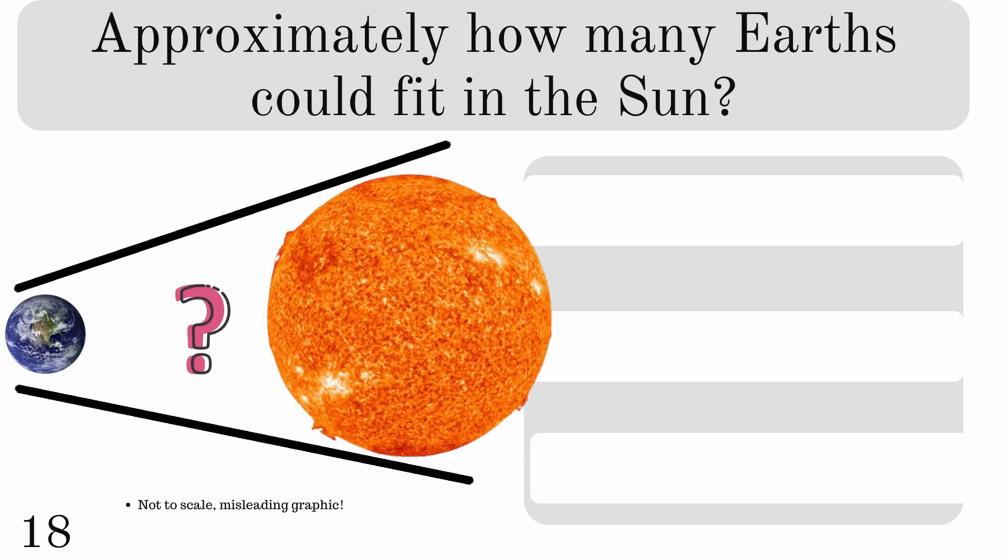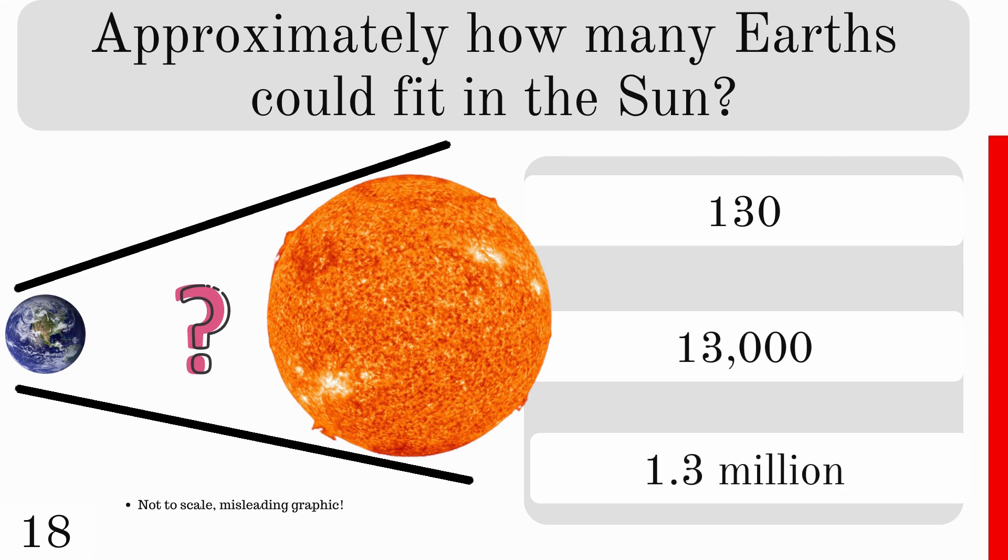Approximately how many Earths could fit in the Sun? 130, 13,000, or 1.3 million? And the answer is 1.3 million.